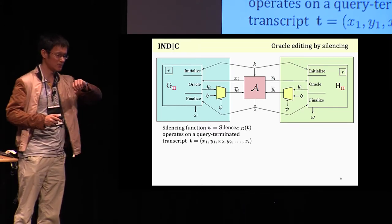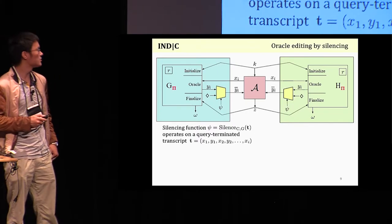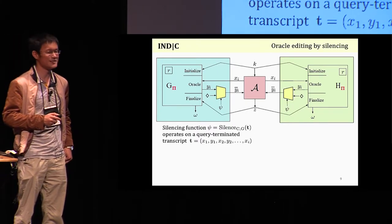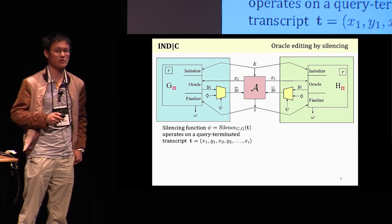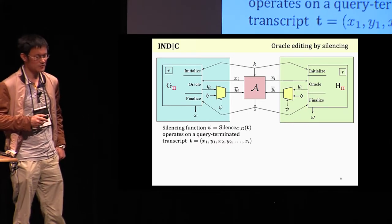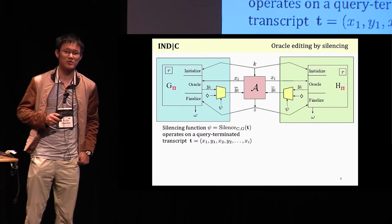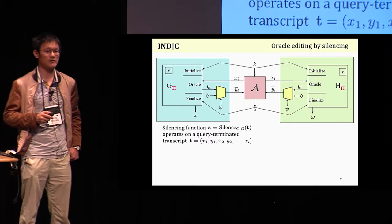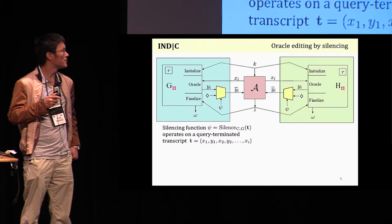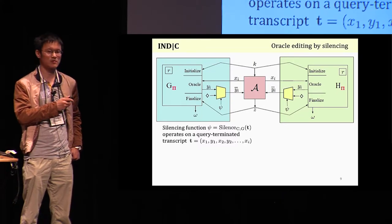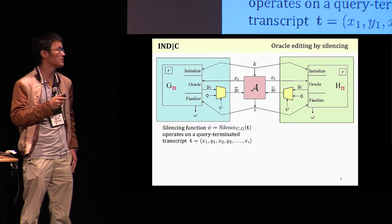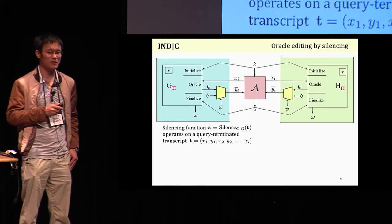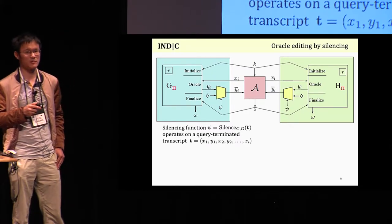Okay, so now comes the real crux of our whole framework. How should we define this silencing function? Because this really captures what we mean by trivial queries. So we think that a query is trivial if the adversary, based only on the current game transcript and based solely on the fact that the underlying scheme is in the correctness class C, knows the answer beforehand. So let me repeat this. This is very important.